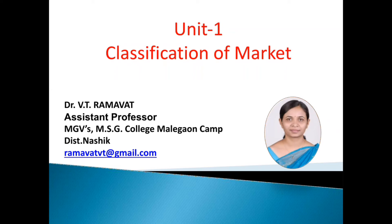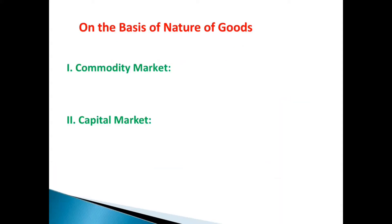Hello everyone. In the last lecture we had seen the classification of market on the basis of transaction and competition. Now in this lecture we are going to discuss the classification of market on the basis of nature of goods. On the basis of nature of goods, market is classified into two parts: one is commodity market and second is capital market.